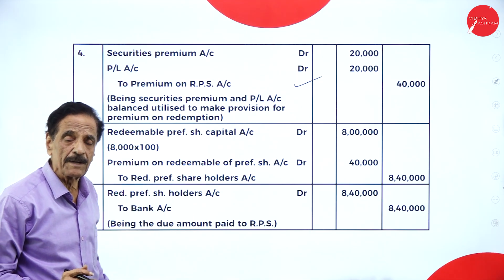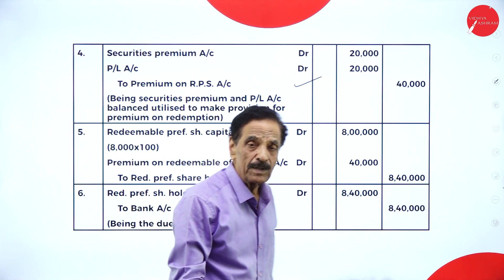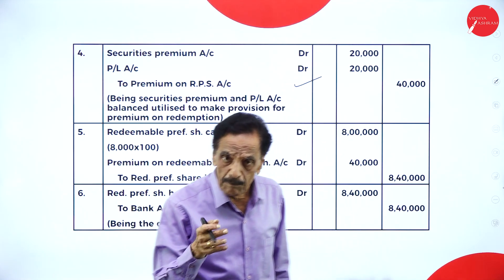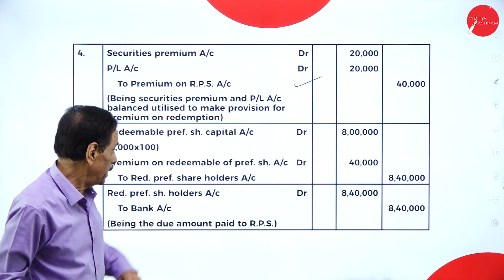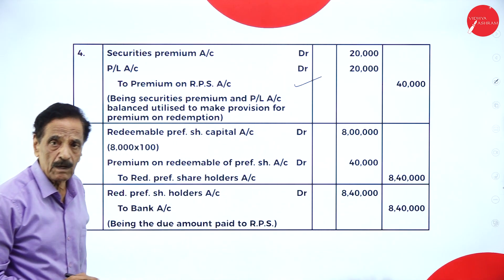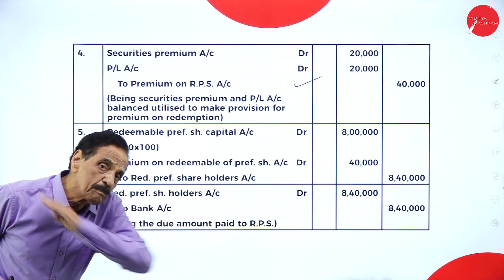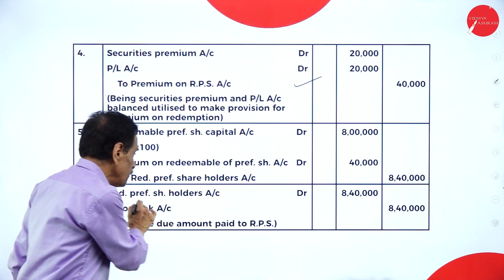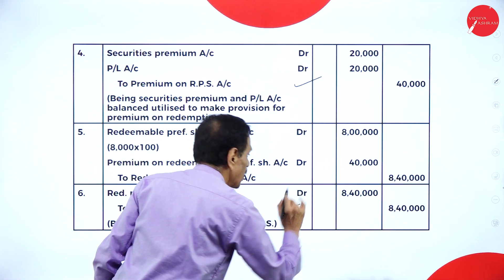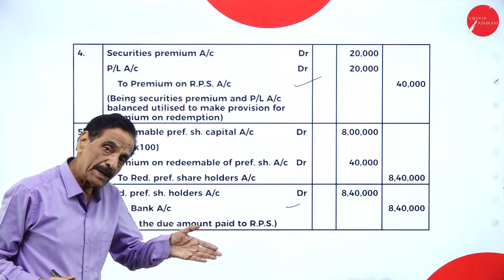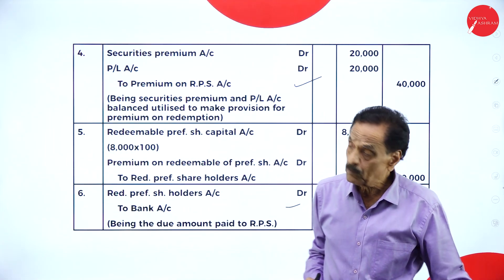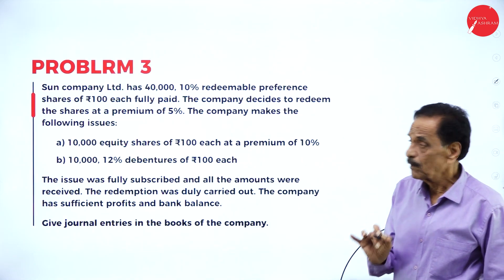Redeemable preference share capital account debit 8 lakh, redeemable preference share premium account debit 40,000 to redeemable preference shareholder account 8 lakh 40,000. Pay back to them: redeemable preference shareholder account debit to bank account. First transfer entry, then payback. Moving on to the third problem.